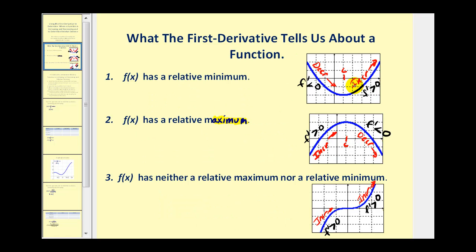This function in blue has a relative minimum because it changes from decreasing to increasing, which can be determined where the first derivative changes from negative to positive. The second function has a relative maximum at x equals c because the function changes from increasing to decreasing, which will be indicated by the first derivative changing from positive to negative.